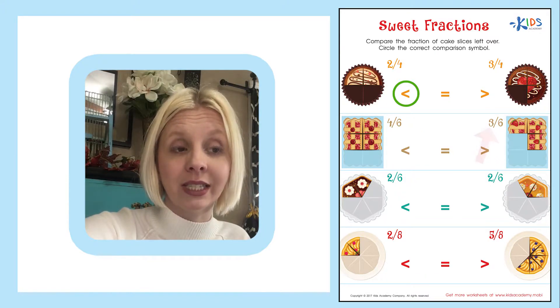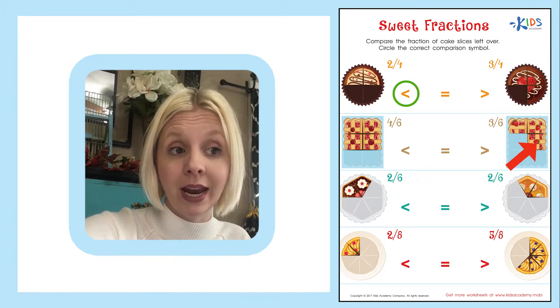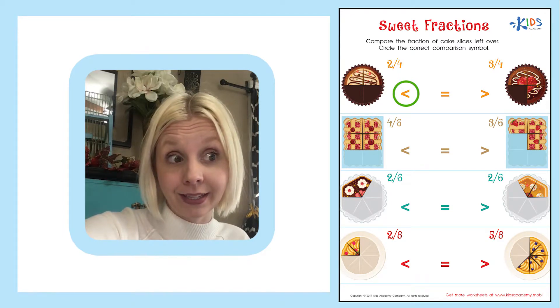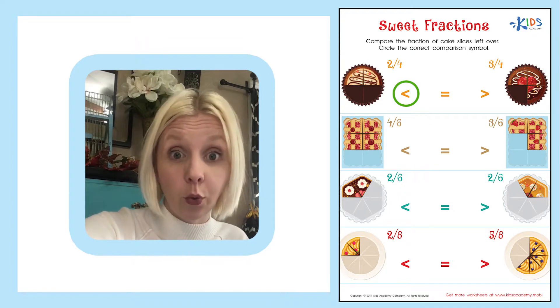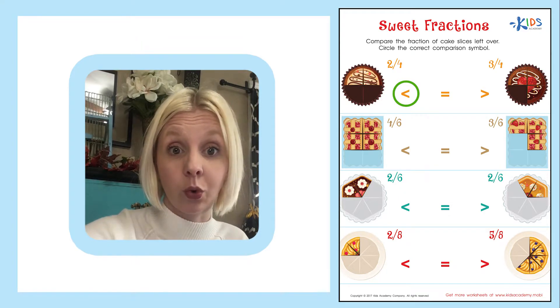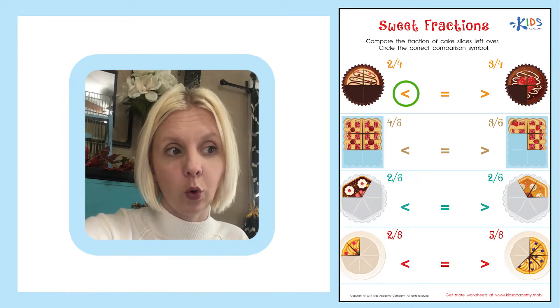The next one is three-sixths, which means three out of six pieces are left over. Would you rather have four pieces or three pieces? Four is the most. So we're going to circle the sign that faces or is trying to eat the four-sixths.